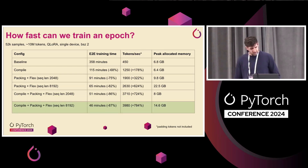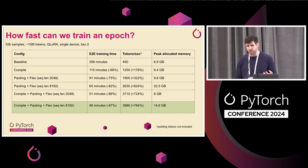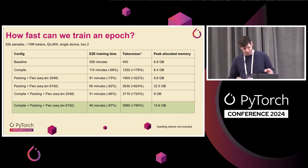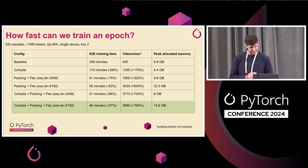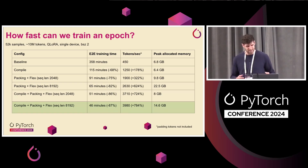If we add compile to packing and flex attention, now we're down to 50 minutes. At sequence length 8K with compile, we're down to about 45 minutes and almost 4,000 tokens per second. One thing I want to call out: a lot of places log tokens per second counting padding tokens, which I don't think anyone practically cares about. This is not including padding tokens. If you include padding tokens, it actually makes sample packing look like it performs worse, when in reality it doesn't. People should only care about unpadded tokens.